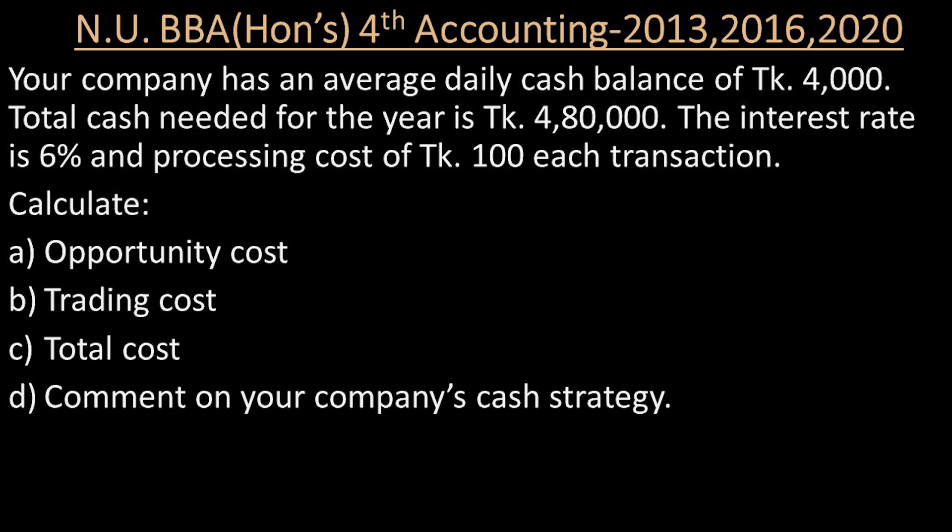This is an important question from 2013. Your company has an average daily cash balance of 4,000. Our company has a total cash needed for the year of 480,000. The interest rate is 6%, and the processing cost is 100 per transaction.